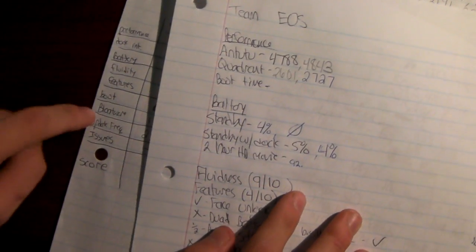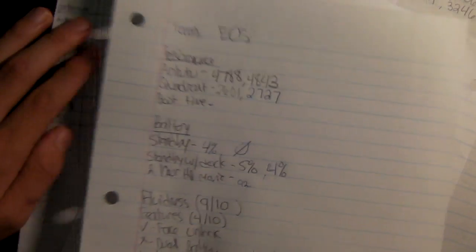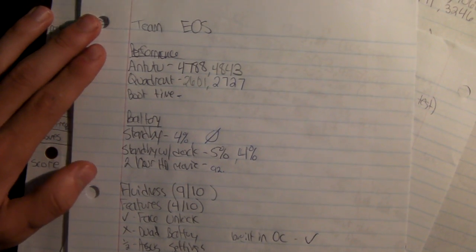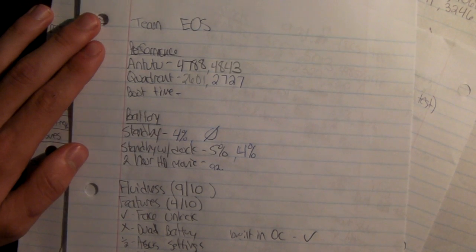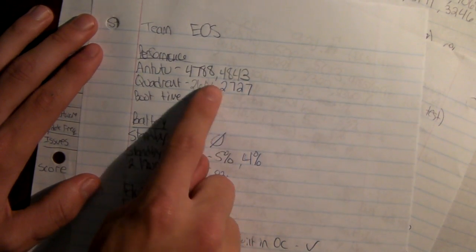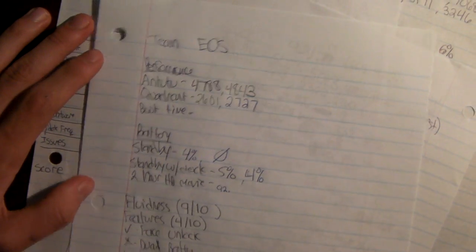Same with battery life and boot time. Now, the most recent one I did was Team EOS, which is a decent firmware. It's very basic, kind of like Revolver, but it's a bit buggier, and the performance, as you can see, is not quite as good. Stock is about 5,000. This is about 4,788 for Antutu.